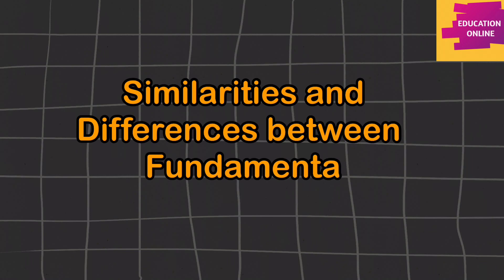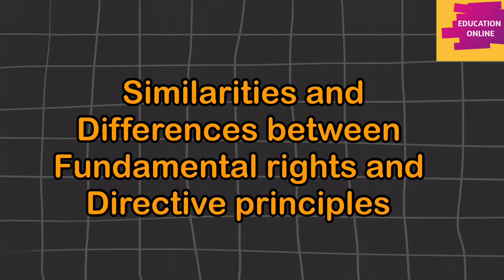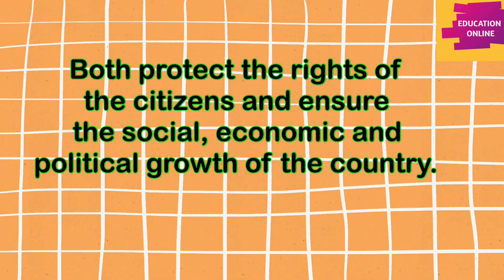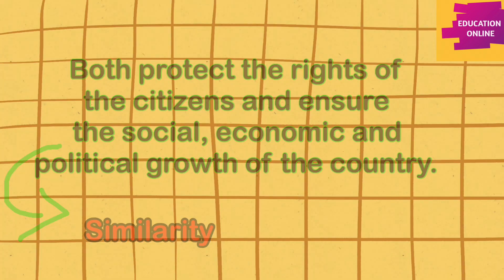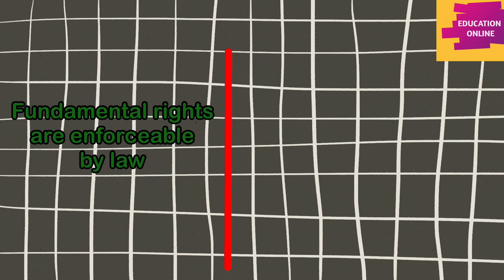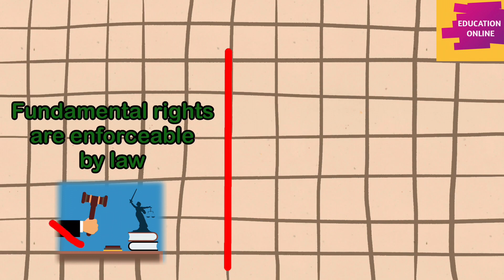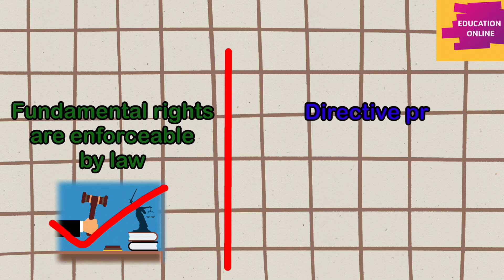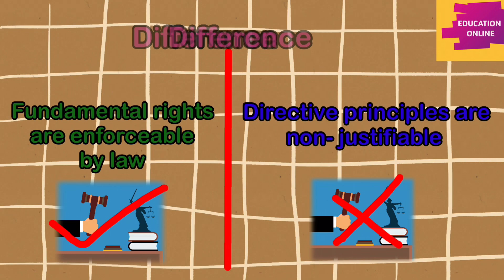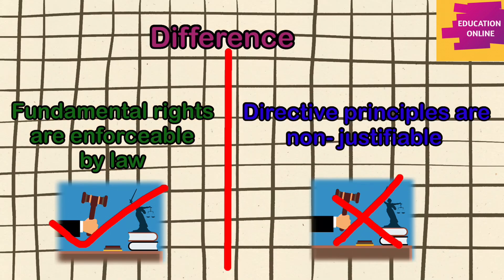Next, we come to the similarities and differences between fundamental rights and directive principles. Both protect the rights of the citizens and ensure the social, economic and political progress of the nation. However, the difference is that fundamental rights are enforceable by law — if a person is denied his or her fundamental right, that person can move to the court and demand justice. That is not the case with directive principles; they are non-justiciable, meaning if any directive principle is not given to you, you cannot go to the court to ask for justice.